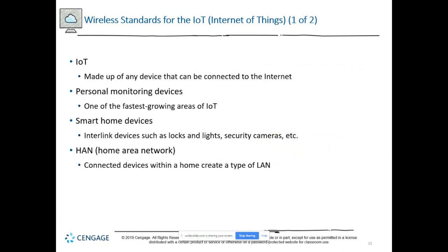Slide 13 talks about IoT devices and how fast personal monitoring devices are growing, along with smart home devices — locks, doorbells, lights, thermostats. Connected IoT devices can form a home area network. IoT is taking over everything — it's everywhere. It's amazing what they have available.